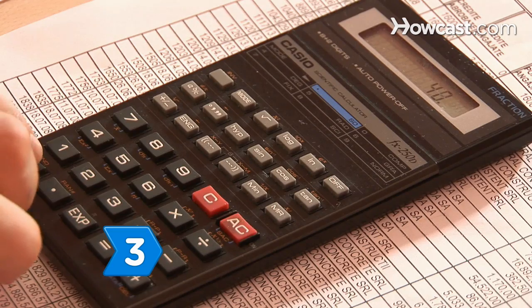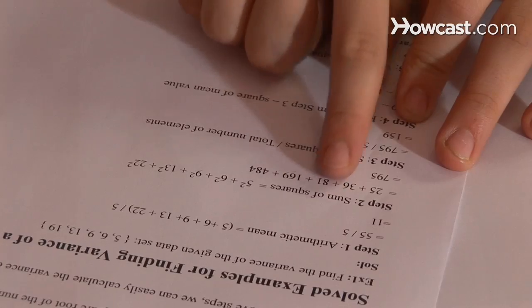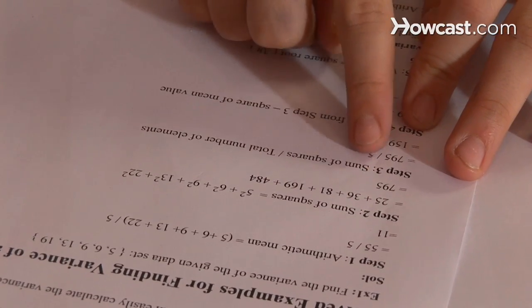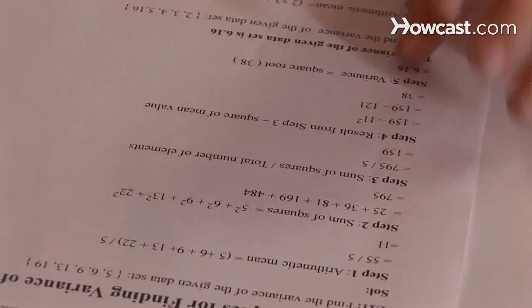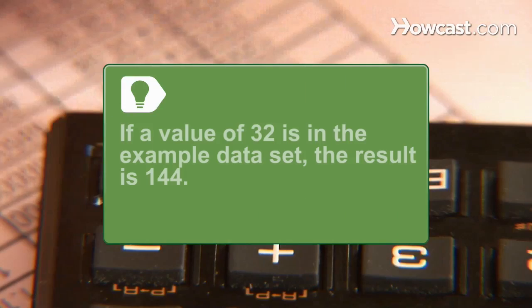Step 3: Subtract the mean or average from each value in the data set and then square the difference, or multiply the result by itself. For example, if a value of 32 is in the example data set, subtract 20 from it and then square the result. The result is 12 squared, or 144.